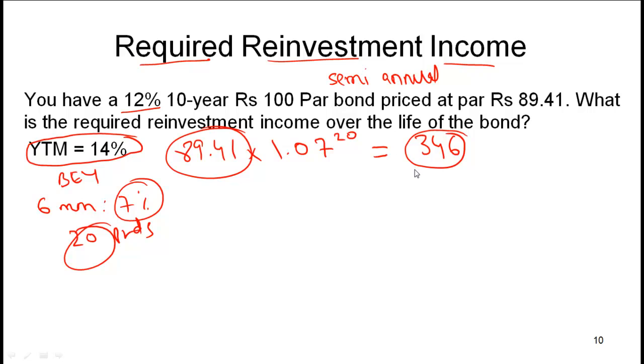Number one is the total coupon payments that you will get. You are going to have 20 coupon payments where each coupon payment is 6% - remember 12% is for the year, that means 6% or 6 rupees per 100 is for every 6-month period. So 6 per coupon into 20 coupons equals 120.